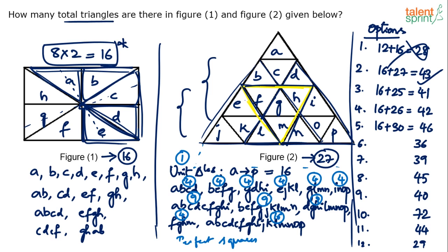The final answer is 16 plus 27 = 43, which is option 2.